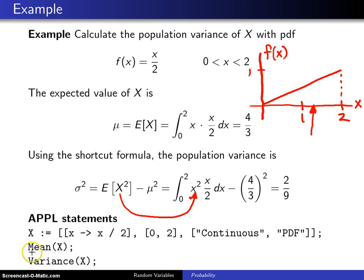Then if you simply call the mean function and the variance function, they will return 4 thirds and 2 ninths as exact fractions.